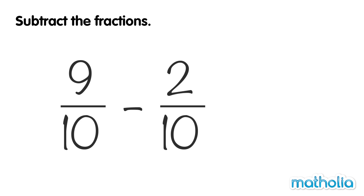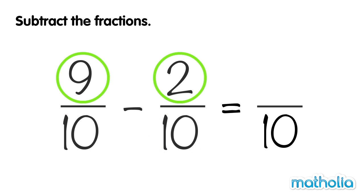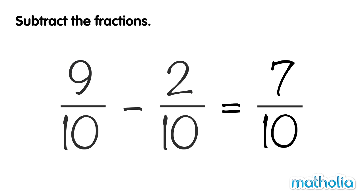Subtract the fractions. Let's find 9 tenths minus 2 tenths. The denominators of these fractions are the same — they are both 10. These fractions are like fractions. To subtract like fractions, we keep the denominator the same and subtract the numerators. 9 minus 2 equals 7, so 9 tenths minus 2 tenths equals 7 tenths.